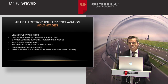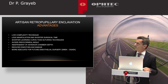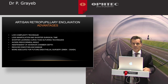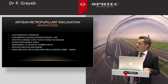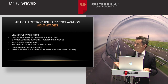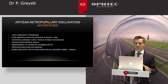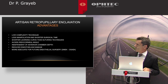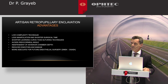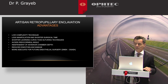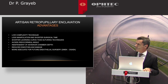So what are the advantages of artisan retropupillary implantation? It's a low complexity technique that requires less manipulation and shorter surgical time, making it a predictable and more reproducible technique. As it's implanted in the posterior chamber, it doesn't depend upon the dimension of the anterior chamber, which reduces endothelial cell damage.